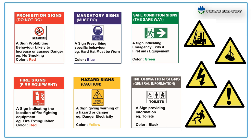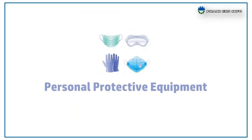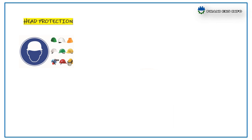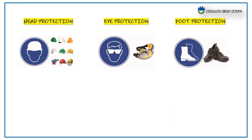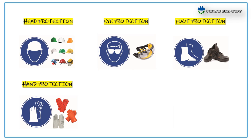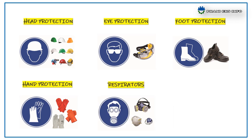PPE must be worn at all times on site. There are two types of PPE: mandatory PPE and work-specific PPE. Mandatory PPE means safety helmet, goggles, and safety shoes. Job-specific or work-specific PPE depends on the work activity — we have to use different types of PPEs such as hand gloves, respirators, safety belts, etc.